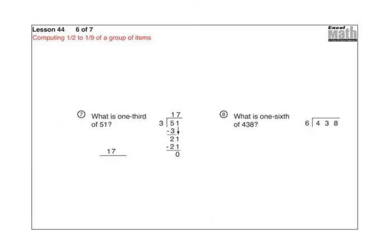Here are some problems where you can just do the division. They're showing you how to do this. What is 1 third of 51? Remember, 1 third means we're going to divide by 3. So they did 51 divided by 3 and got 17. Go ahead and pause the video, do number 8, and turn it back on when you're ready to see the solution.